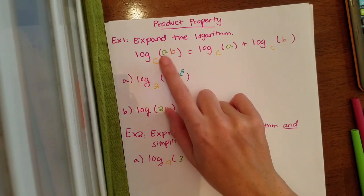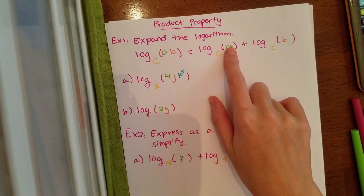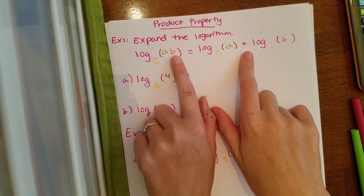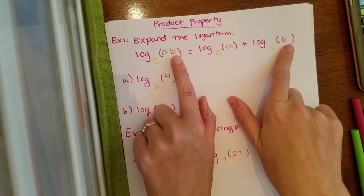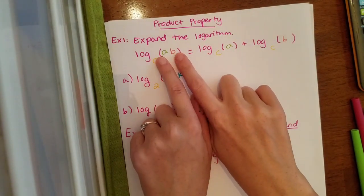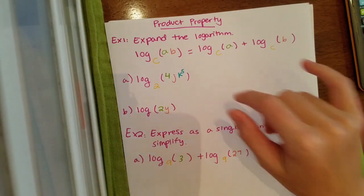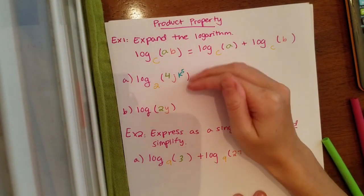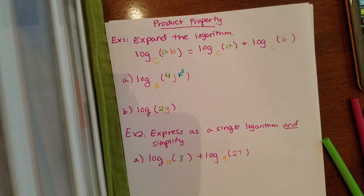So if I log base c of a times b, I can separate the a, I can put the a in one log, and I separate it with an addition symbol and put the other piece of the log in the other log. So you kind of think about breaking these apart into addition, and remember the base carries over. So we're going to use this logic and all we're going to do is practice expanding the log.